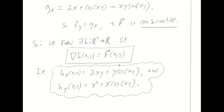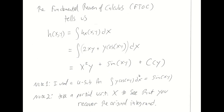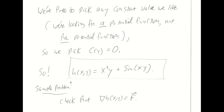We started with h sub x and h sub y. As soon as we knew that big F was conservative, we knew its component functions were respective partials of some little h. I went from that partial and backed up to little h by integrating. I then differentiated with respect to the other variable and came down the other path to match up that expression with another expression for h sub y. Ultimately, you are able to use this method to construct the potential function for a conservative vector field. Check that the gradient of little h is the big F hat we began with.